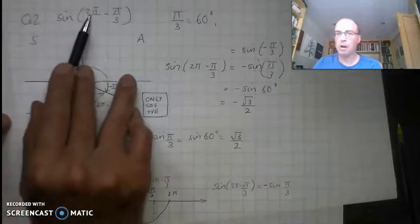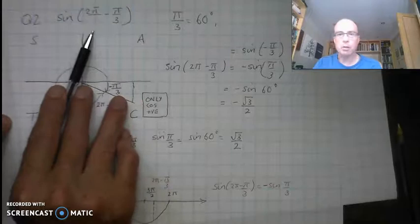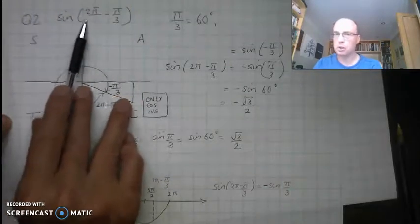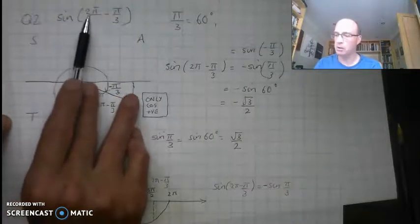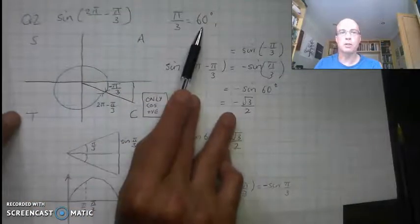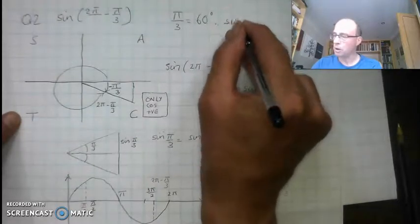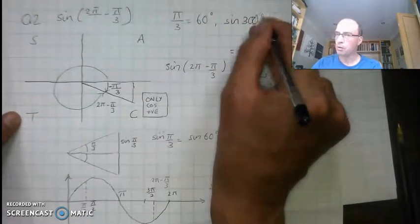So we're trying to find out the sine of 2π minus π/3. Converting it back to degrees, just to see what the question is really asking us to do. 2π is 360, π/3 is 60, so they're asking us to work out sine of 300 degrees.